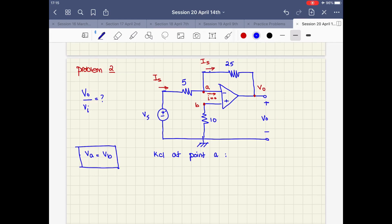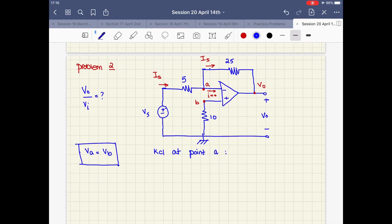I have one current entering the node and another current leaving the node. The current entering the node is vs minus va over 5, that equals va minus vo over 25.